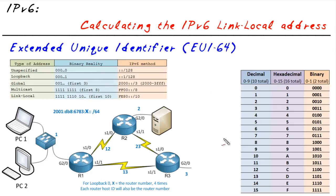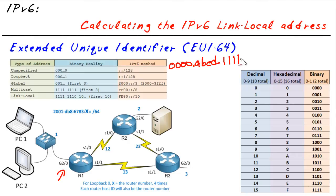As an example, let's say this interface had a MAC address of 0000.ABCD.1111 — that's a hexadecimal representation. If that was the MAC address, here's what would happen. We'd take that MAC address, cut it down the middle, and add FFFE in the middle, which represents 16 more bits. So we have the 48 bits from the MAC address plus 16 bits, with FFFE stuck in the middle.